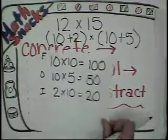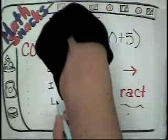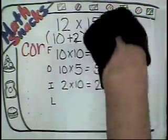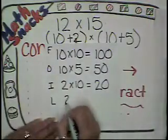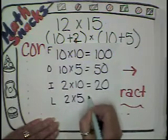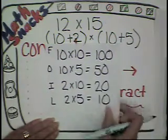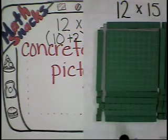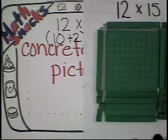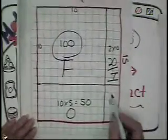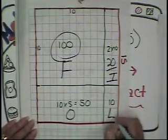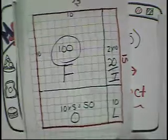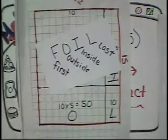And the L stands for? Last terms. Which would be my 2 and my 5. So I take 2 times my 5 to get the 10. And on my concrete, that would be 2 times 5, which is my 10. And in the picture, here's my 2 times my 5. So here's the L. So there is the FOIL method.